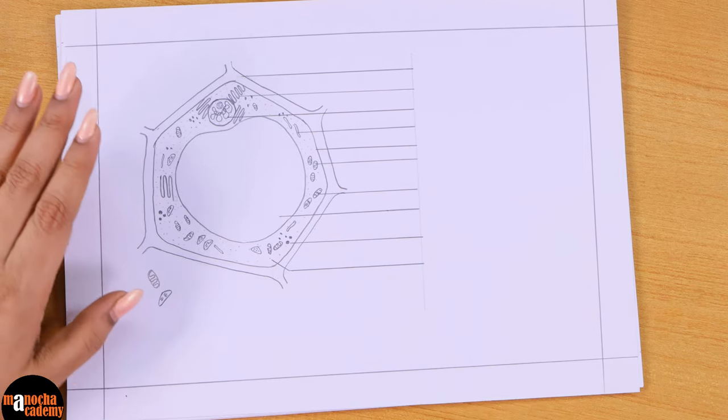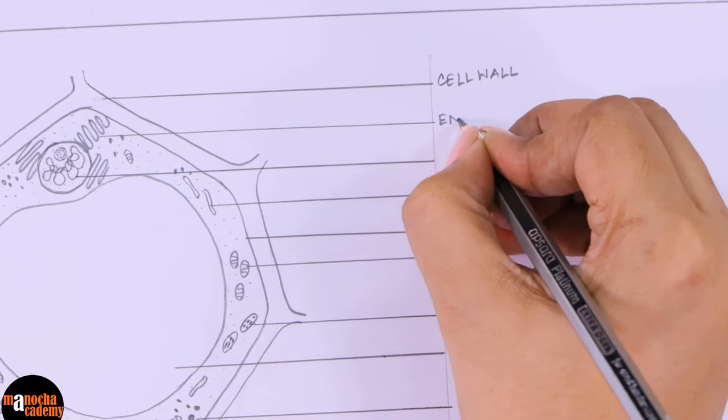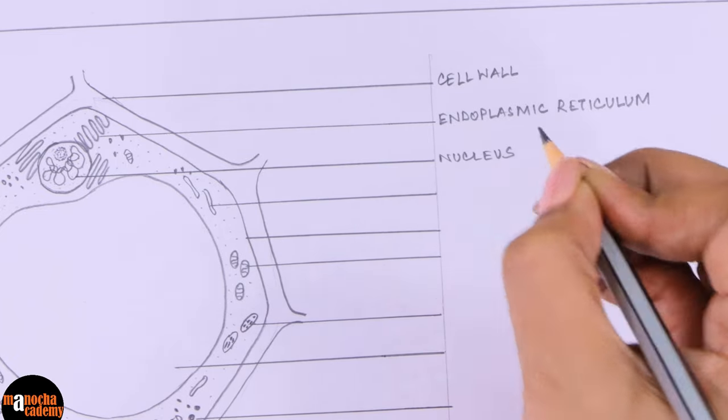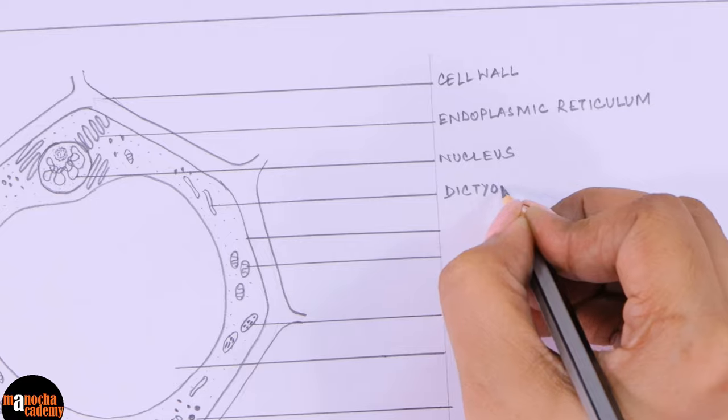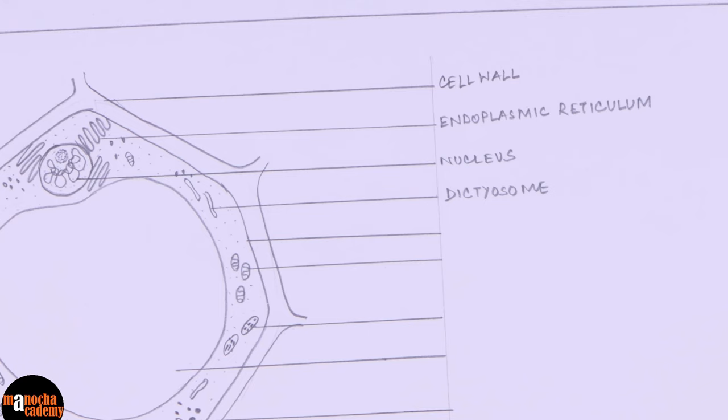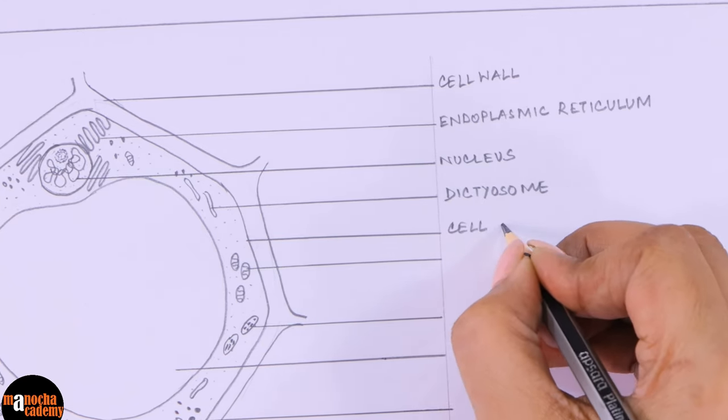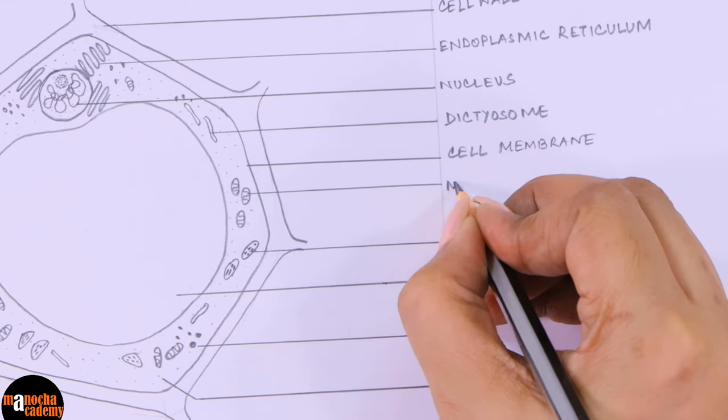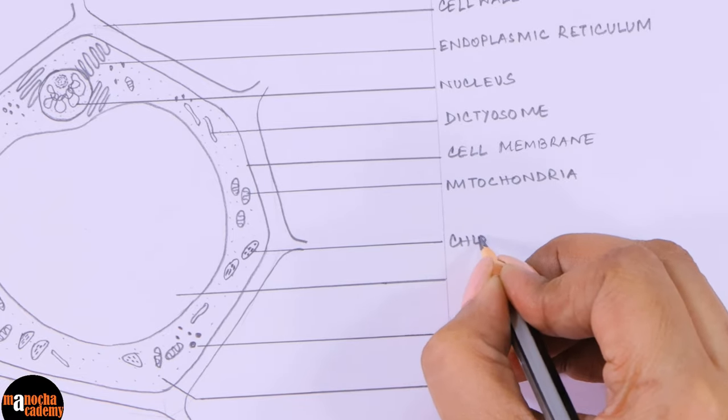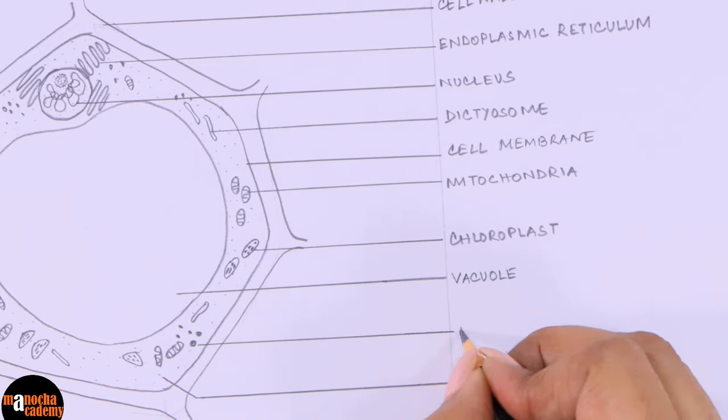So let us label them. First we have the cell wall, then this is the endoplasmic reticulum, then we have the nucleus, then this is dictyosome. You know that plant cells do not have Golgi apparatus; they have free-floating cisternae which are called dictyosomes. This is the cell membrane, then we have mitochondria, this is chloroplast, vacuole, ribosome, and last but not the least, we have the cytoplasm.